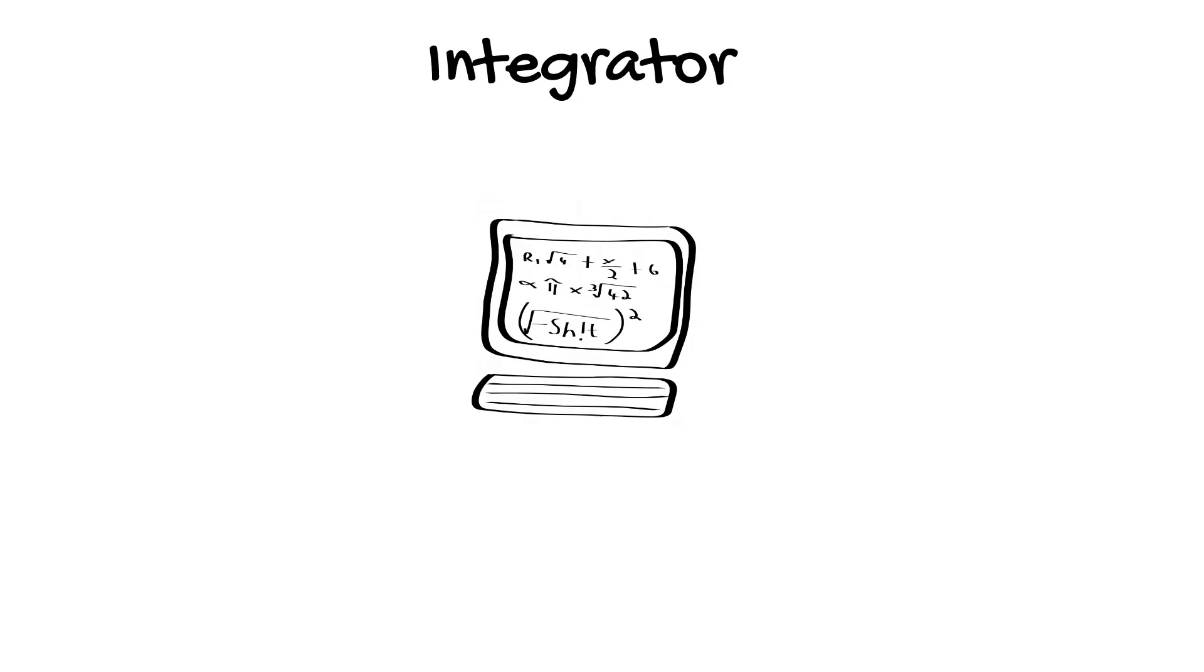Next, we have the integrator or computer which processes the electrical signal. This is where pulse oximetry gets very clever. In processing the signal, we need to review two physics laws: Beer's law and Lambert's law. These are often combined and termed Beer-Lambert's law.